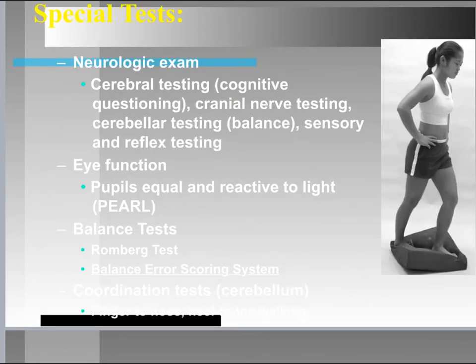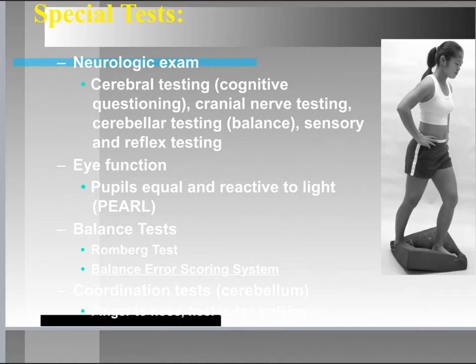In terms of special tests to rule in a head injury, we can't rely solely on patient signs and symptoms. One approach is a neurological exam. In a clinical setting, we can test the cranial nerves — having the patient smell coffee beans, testing balance, testing reflexes like the patellar tendon tap, and asking orientation questions.